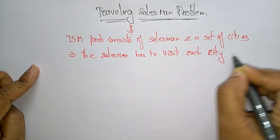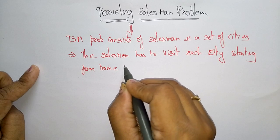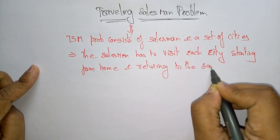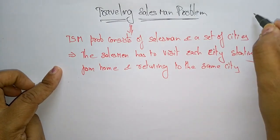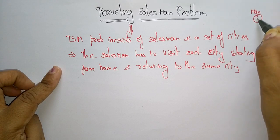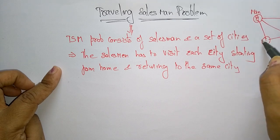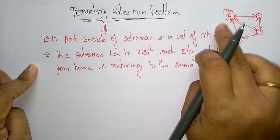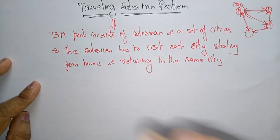The salesman has to visit each city starting from home and returning to the same city. So a man is there in his hometown; he wants to visit all the cities and again return back to his place. The salesman has to visit all the cities starting from his hometown and returning to the same city.